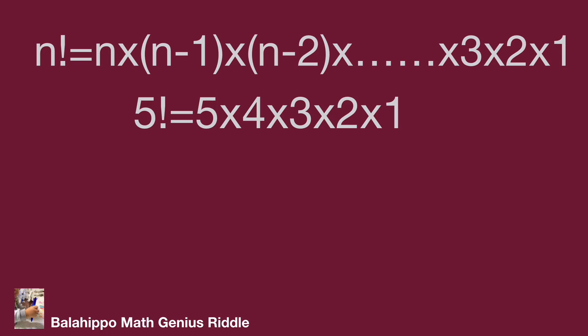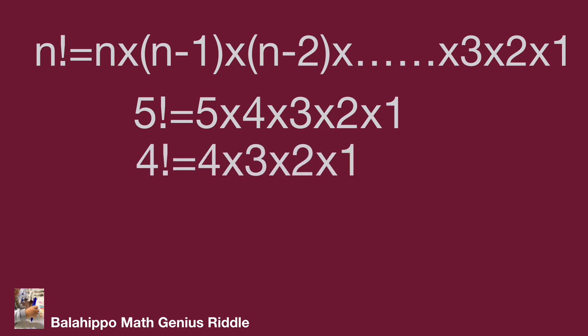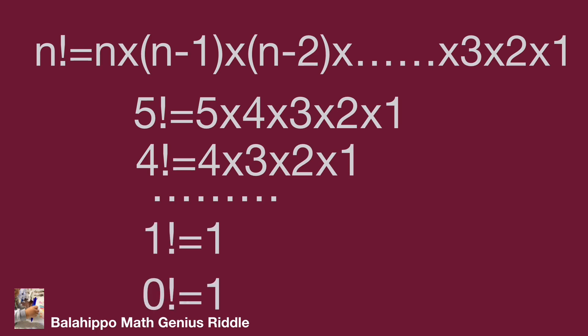2 times 1. And 4 factorial equals 4 times 3 times 2 times 1. From here we find 5 factorial equals 5 times 4 factorial. Also we define 0 factorial equals 1.